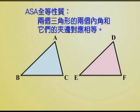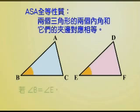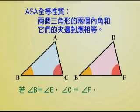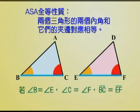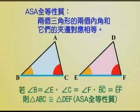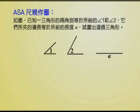ASA全等性质就是：当两个三角形的两个内角和它们的夹边对应相等时，这两个三角形就会全等。也就是说在三角形ABC和三角形DEF中，角B等于角E，角C等于角F，线段BC等于线段EF，这两个三角形就会全等。